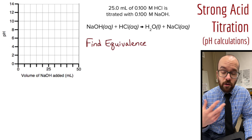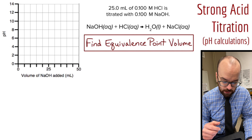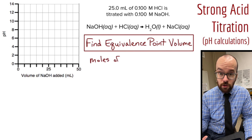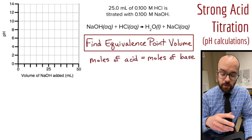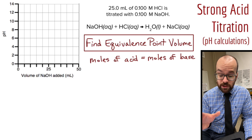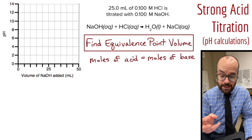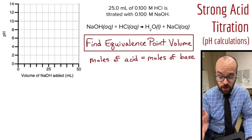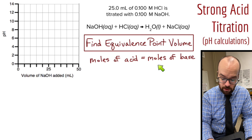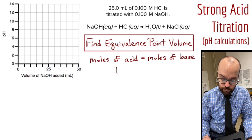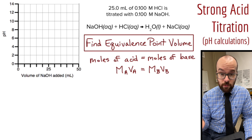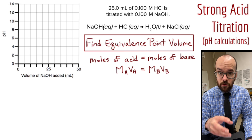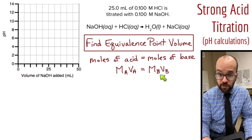Before I can plot out all of my points, I want to figure out where the equivalence point is for my titration. This is the main calculation you do whenever you do a real titration in the lab to figure out an unknown molarity — here we're finding an unknown volume. The principle is that the moles of acid you start with equals the moles of base you've added once you reach the equivalence point. In other words, all the moles of acid are neutralized by all the moles of base. That equation is: molarity times volume of the acid equals molarity times volume of the base — molarity times volume gives you moles, so moles of acid equals moles of base.